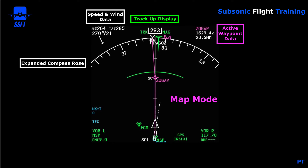Next to that we have our orientation as far as the way we're heading. This happens to be a track up display. Some airlines prefer heading up display; most people use track up. For more information, you can check the EFIS heading video that talks about the difference between track up and heading up.